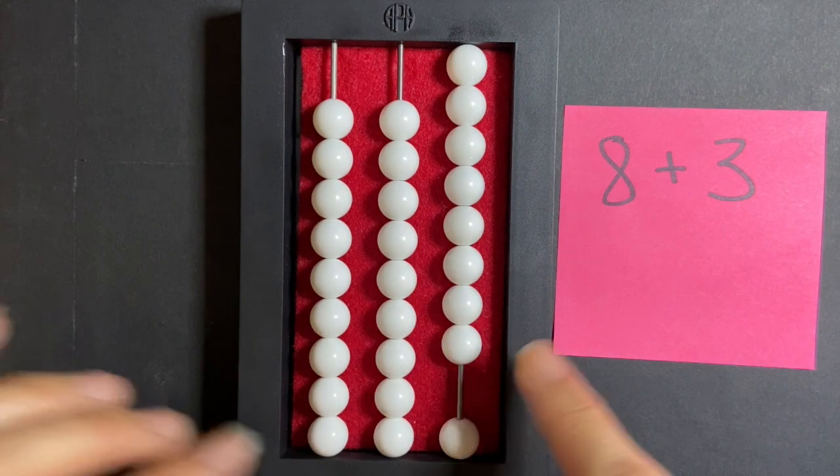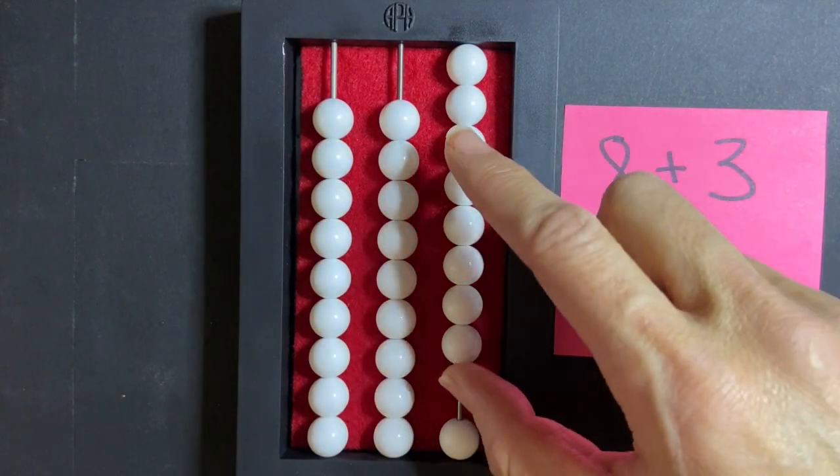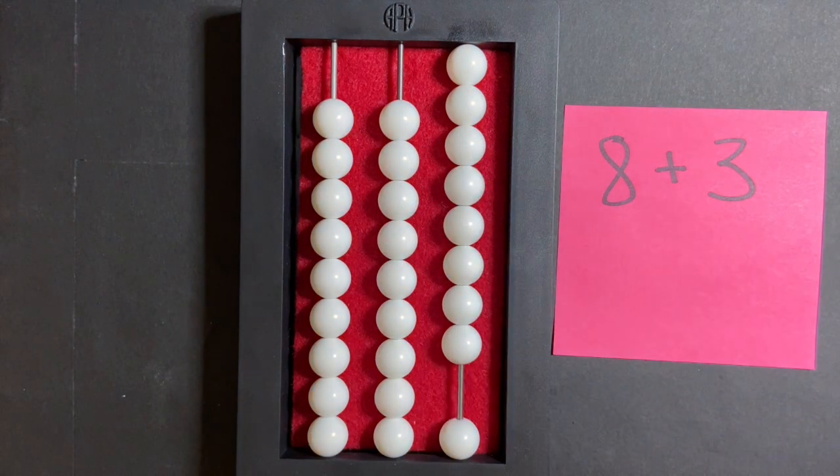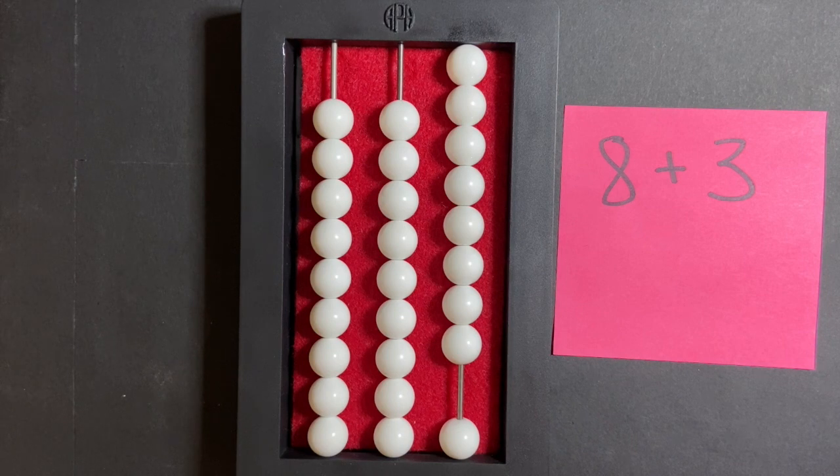So initially when we're teaching our abacus we want to have them counting out each bead like that. As they progress along they may be able to just set the number 8 without counting out each bead, but for now let's have them count out each bead.